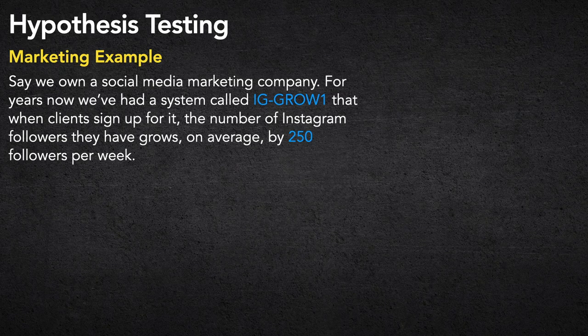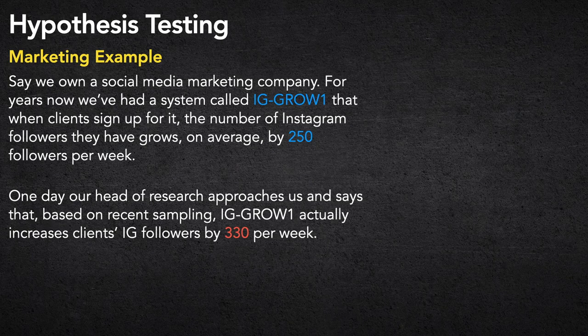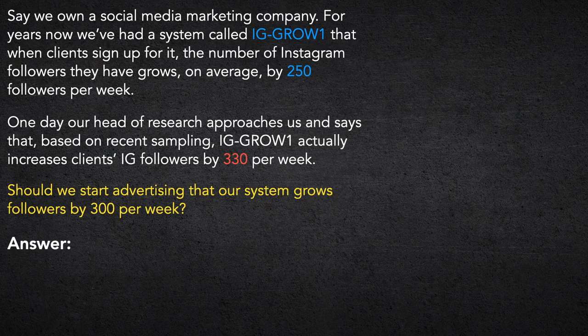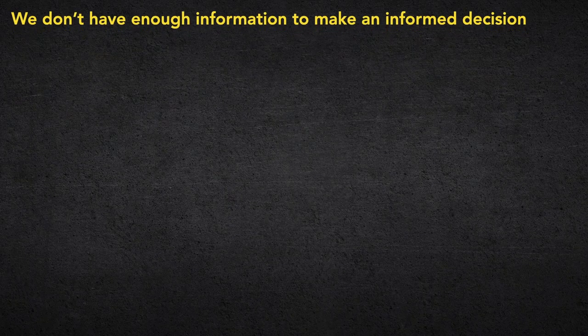Say we own a social media marketing company. For years we've had a system called IG Grow One — when clients sign up, the number of Instagram followers they have grows on average by 250 followers per week. Then one day our head of research says that based on recent sampling, IG Grow One actually increases followers by 330 per week, not the 250 we've been advertising. Should we start advertising 330 per week?